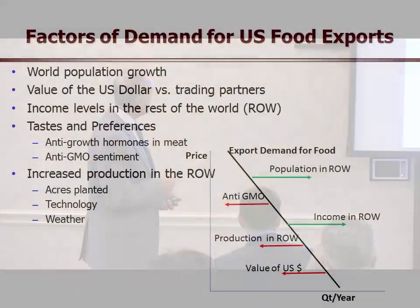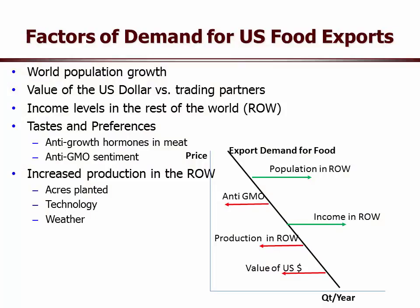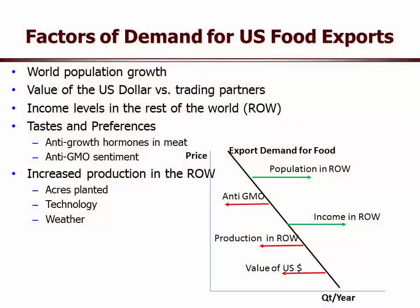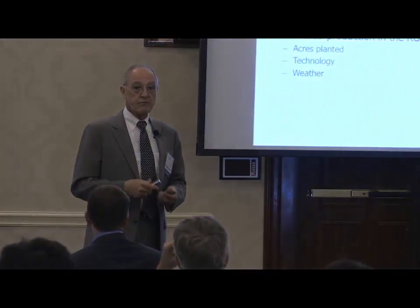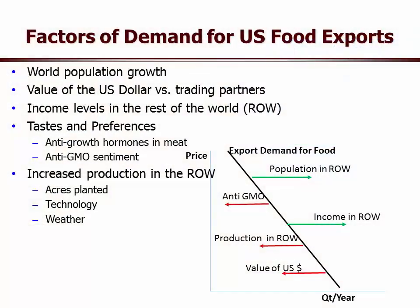Let's look at the factors of demand that affect our exports of food — the things that will shift it out or bring it back. Look at world population, the value of the dollar, income levels, taste preferences, etc. Population increase in the world is going to drag our export demand function out to the right. Income in the rest of the world could increase our demand because they can afford to pay for food — that's called effective demand. Things that pull demand back include production in the rest of the world and a strong US dollar.